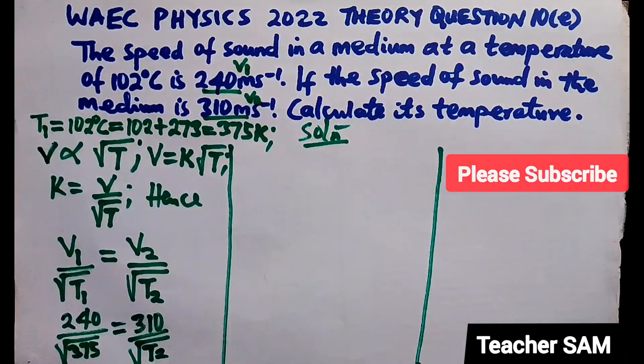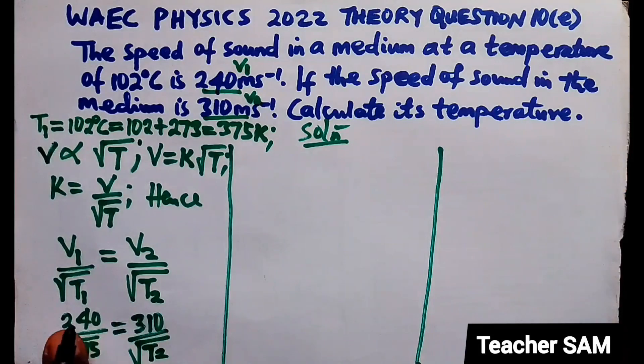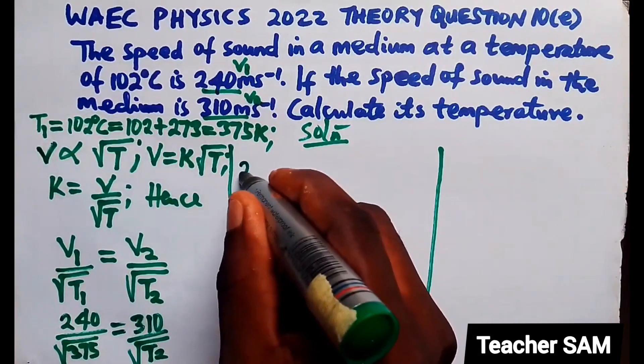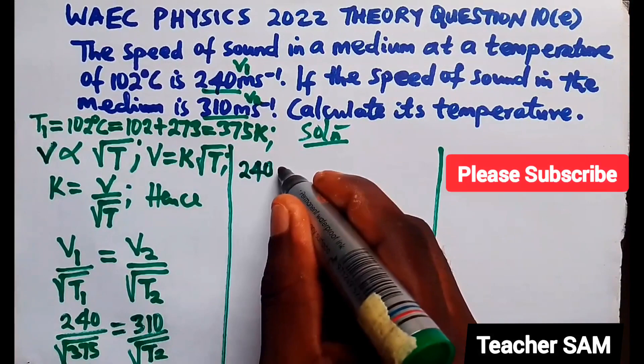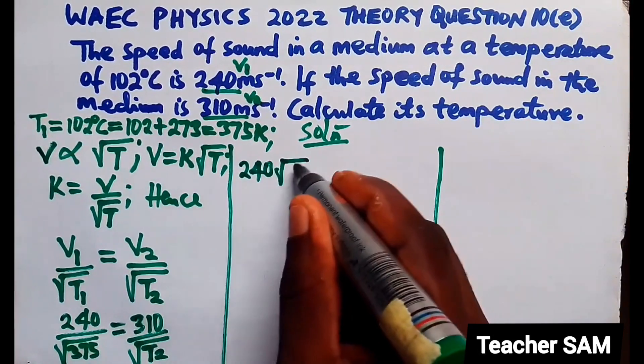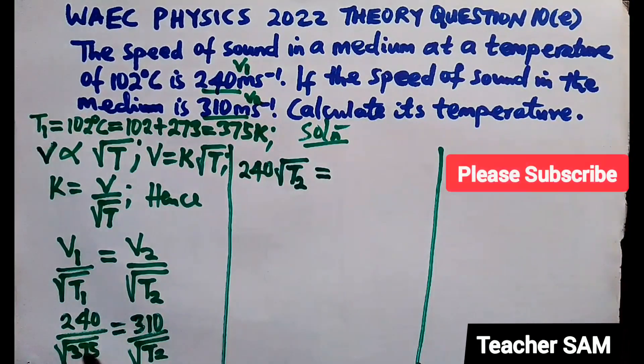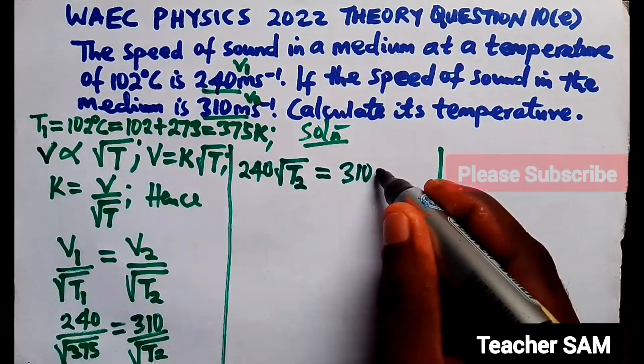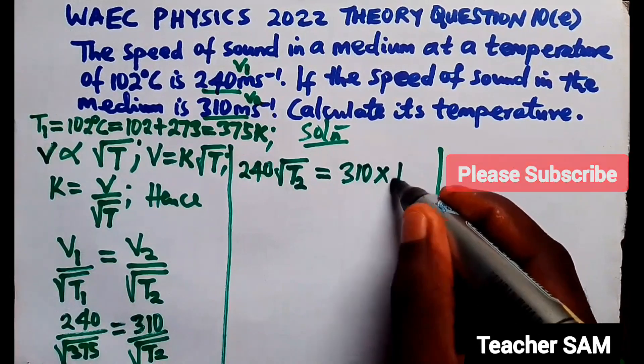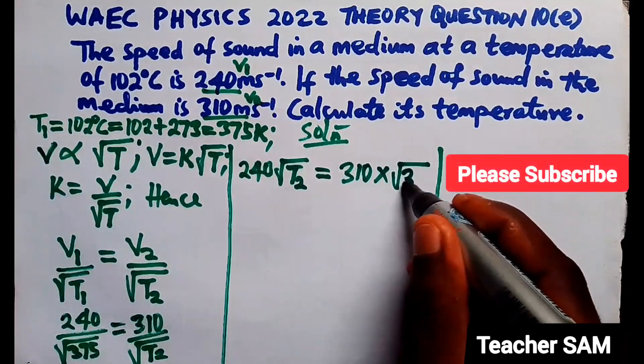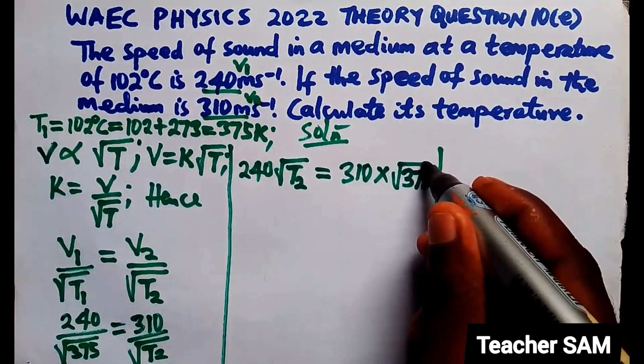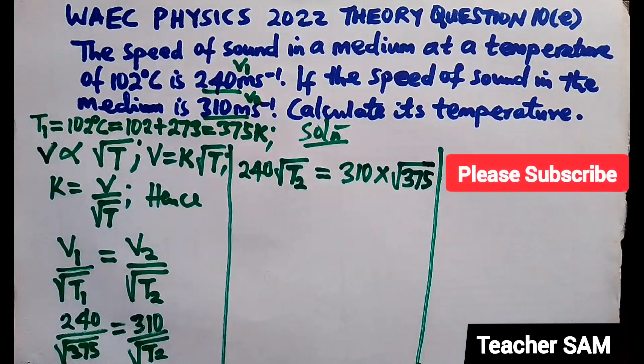Now, we just have to cross multiply, cross multiply and we are good to go. So, this time this, this time this and this time this. Let's say that 240 times this. So, we have 240 into root of T2 equals to, then we have 310 times root of 375.